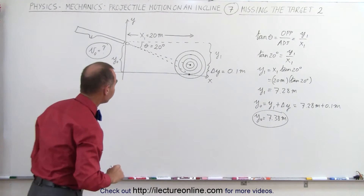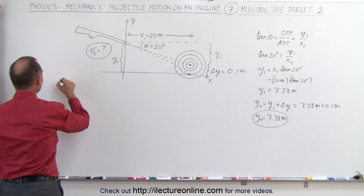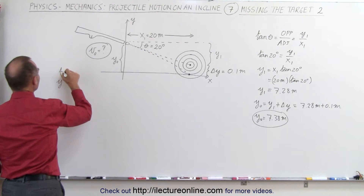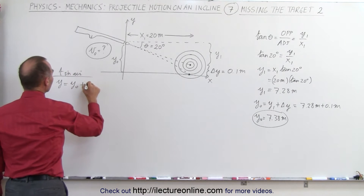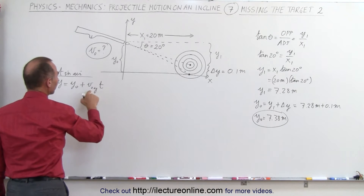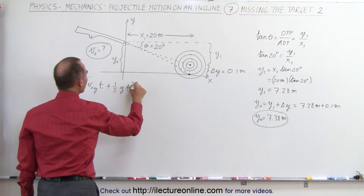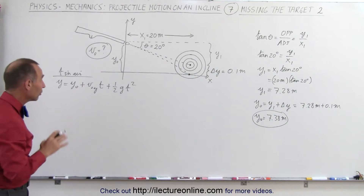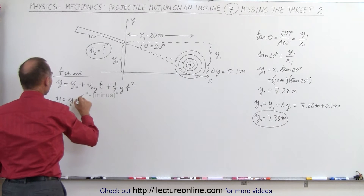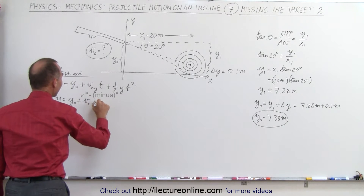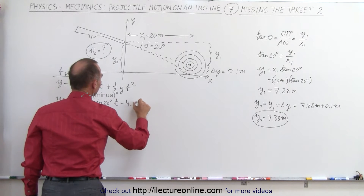Now we're ready to solve the problem. The technique is usually the same — we're going to find time in the air using the y component first. We need y equals y sub nought plus v sub nought in the y direction times time, plus one half g t squared, which means we need to find the initial velocity in the y direction. That gives us y equals y sub nought plus v sub nought times the sine of 20 degrees times t minus 4.9 t squared.